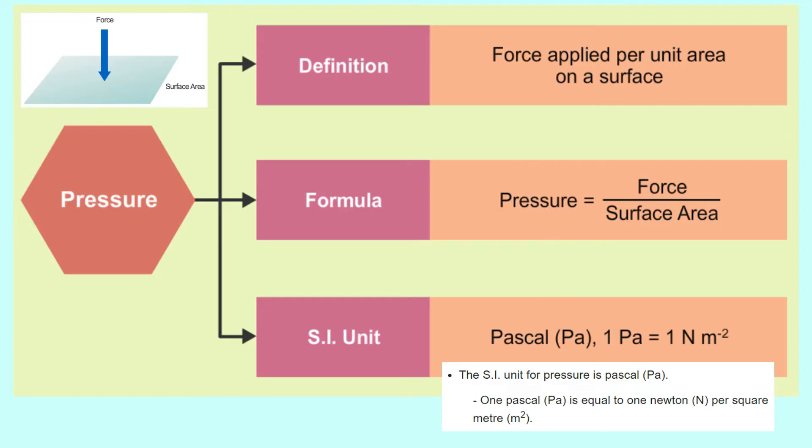The SI unit for pressure is Pascal. One Pascal is equal to one Newton per square meter. Unit SI untuk tekanan ialah Pascal dan 1 Pascal bersamaan dengan 1 Newton per meter persegi.